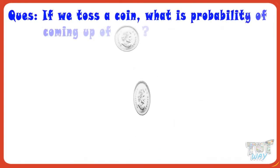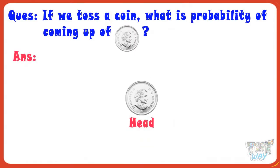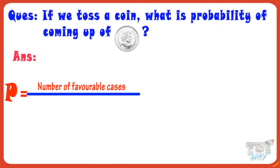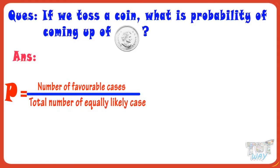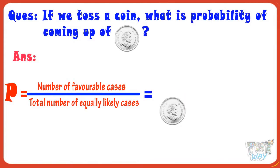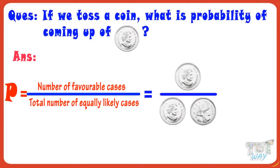If a coin is tossed, what is probability of occurrence of the head? Our formula is number of favorable cases divided by total number of equally likely cases. Here, the total number of equally likely cases are 2, that is, heads or tails. And the favorable case, that is, the case for which we want to find the probability is 1, that is, coming up of the head. So, probability of occurrence of the head is 1 by 2.